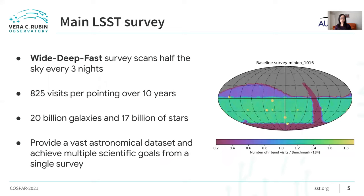Our main LSST survey, the Legacy Survey of Space and Time, will be scanning the full observable sky — that's half the sky observable from the site — and we'll be able to scan the full sky once every three to four nights. At the end of the 10-year survey, for every location in the sky, we expect to have more than 800 images each. We expect to have around 20 billion galaxies and 17 billion stars in the catalog.